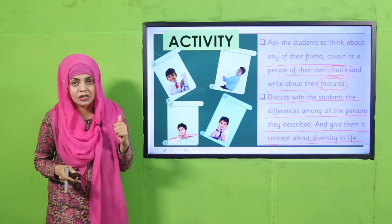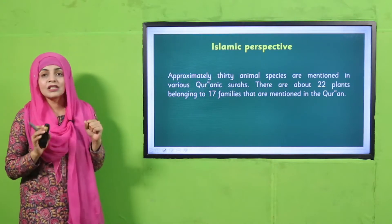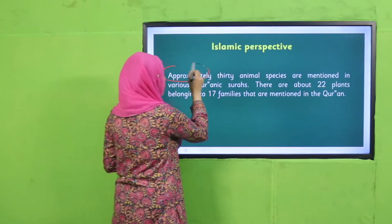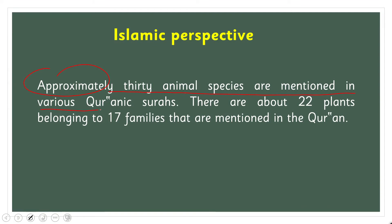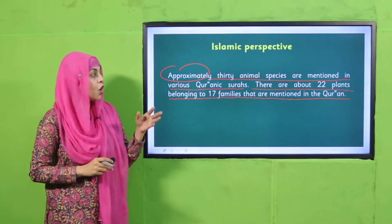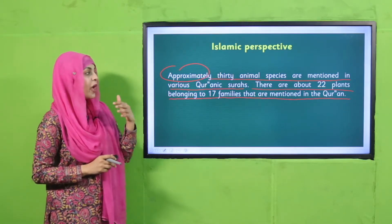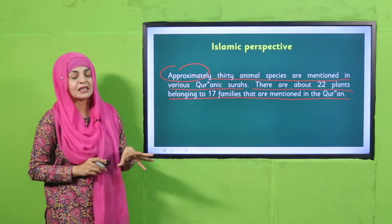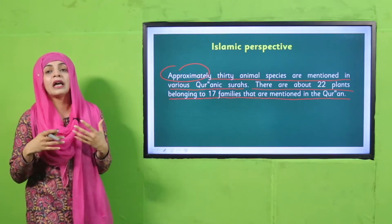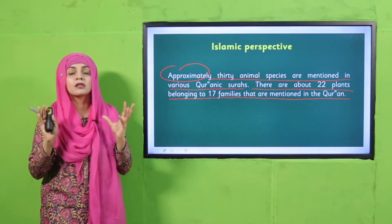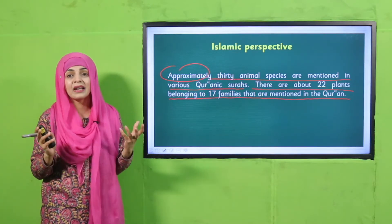From the Islamic perspective, approximately 30 animal species are mentioned in various Quranic surahs, and about 22 plants belonging to 17 families are mentioned in the Quran. So even the Quran describes how Allah has made this planet a diverse habitat for diverse animals and plants.